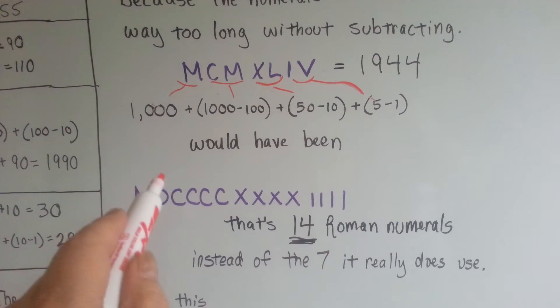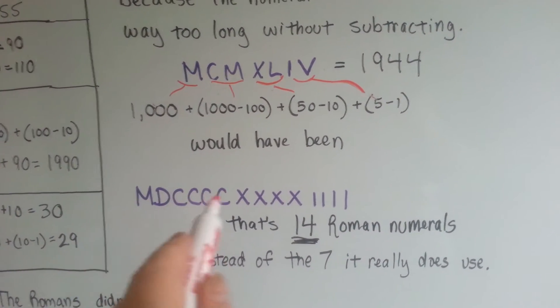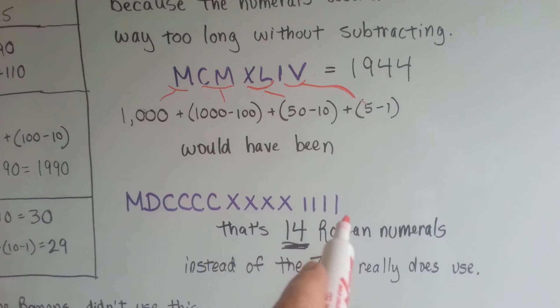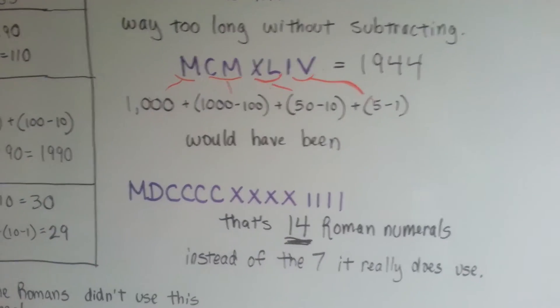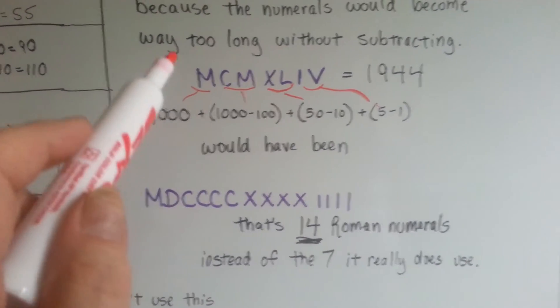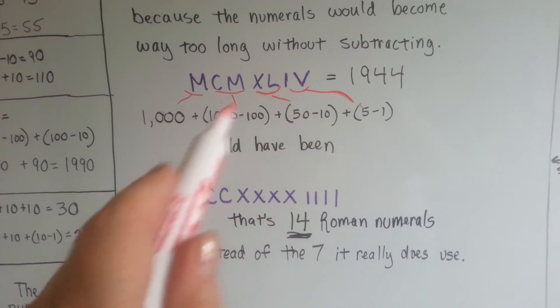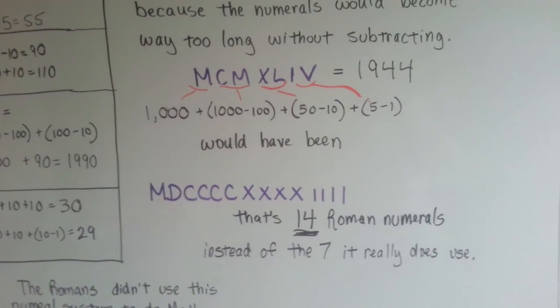It would have been 1,000, then 500, then four 100s, then four 10s, then four 1s. Can you imagine carving that into stone? So they made it very easy for themselves and did a subtraction method so they wouldn't have to carve so much.